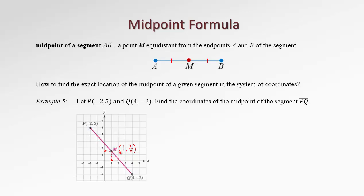What will be the method of finding the coordinates of the midpoint, knowing the coordinates of the endpoints? Let's look at this diagram more closely. If we draw two vertical lines through points P and Q, and two horizontal lines also through P and Q, they will form a rectangle. Let's call it P, P1, Q, and Q1 for easy reference.